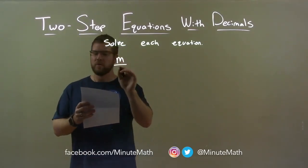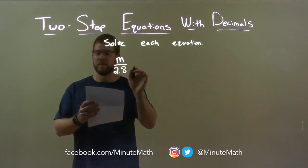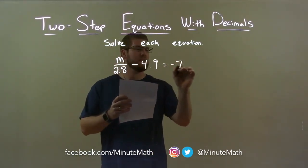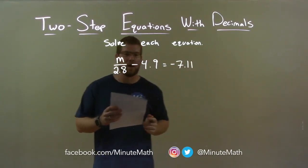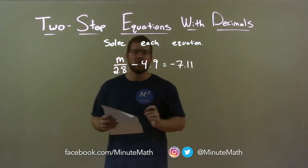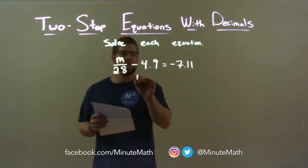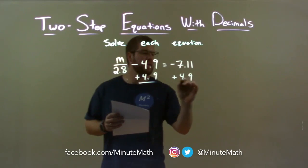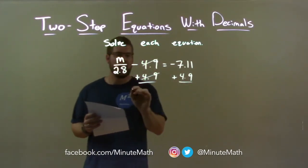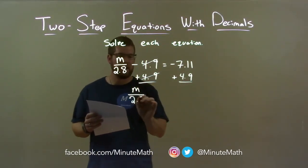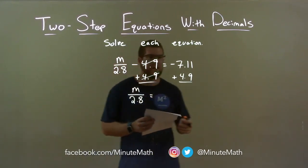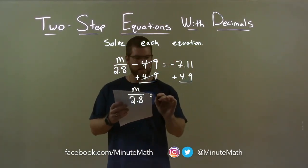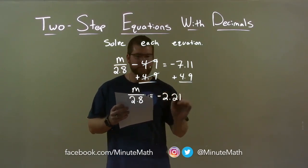M over 2.8 minus 4.9 equals negative 7.11. First thing I want to do is add 4.9 to both sides. This will eliminate the 4.9 on the left, giving me M over 2.8 by itself on the left, and on the right negative 7.11 plus 4.9 comes out to be negative 2.21.